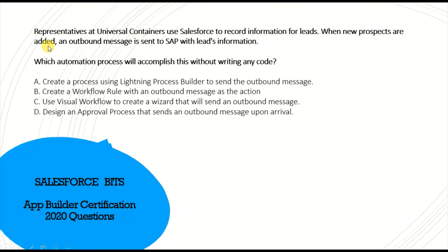Next question: sales representatives at Universal Containers use Salesforce to record information for leads; when new prospects are added, an outbound message is sent to SAP. This is straightforward — the correct answer is B: create a workflow rule with an outbound message as an action. In Process Builder or visual workflow you'd need Apex for outbound messaging, making workflow the direct, correct answer.